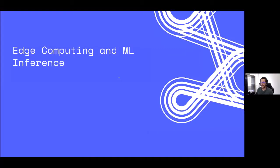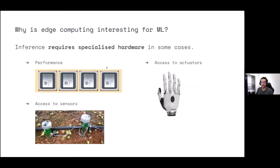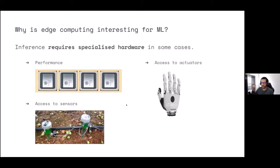Why is edge computing interesting for machine learning, in particular for machine learning inference — i.e., what happens after we train our models? We have to think that sometimes inference requires specialized hardware. This could be things like specialized chips, specialized processors like inference processing units, which are built by Graphcore, or GPUs, or TPUs, etc. Sometimes we also need access to sensors — you can think of facial recognition, or humidity sensors in IoT scenarios, in farms, in an agricultural setting.